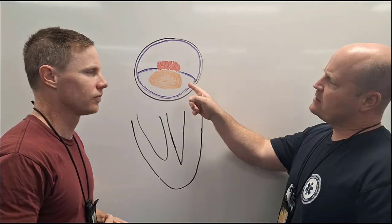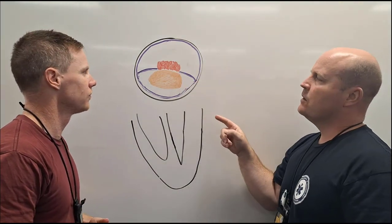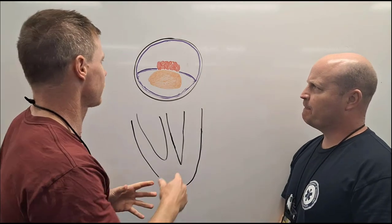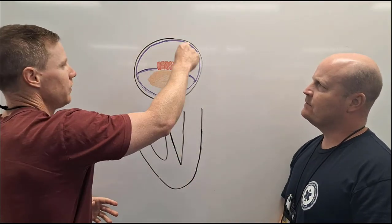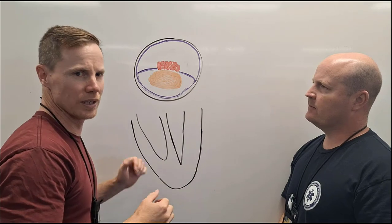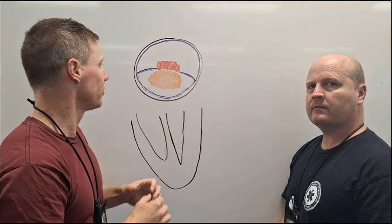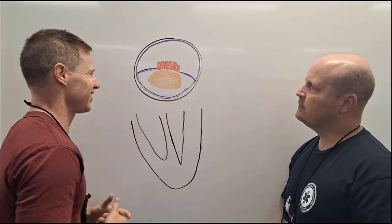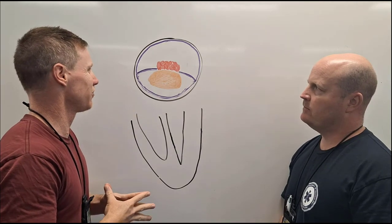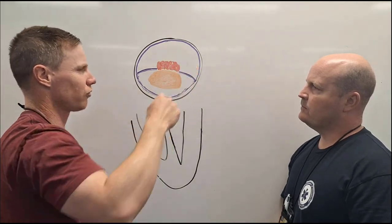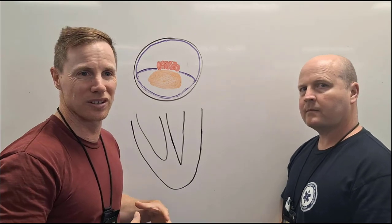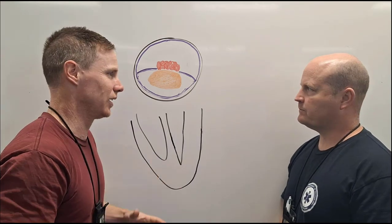If we start getting this clot here, what's the next problem? The next problem is the lumen — the amount of space where the blood flows through — is decreasing, and that means we're gonna get less blood going through the artery, and that's gonna cause ischemia.